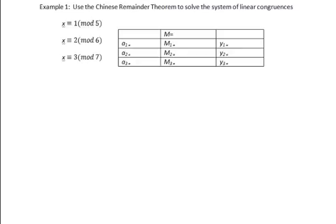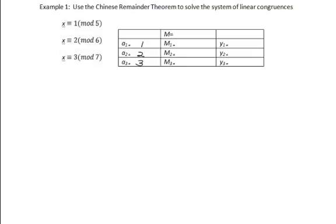Example 1: We're going to use the Chinese Remainder Theorem to solve this system of linear congruences. First, we verify that the mods are pairwise relatively prime — and in fact they are, so we're all set. I've made a table of values so it's easy to fill in all the numbers we need. The values a1, a2, and a3 come from the original congruences: a1 is 1, a2 is 2, and a3 is 3.